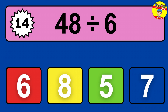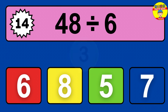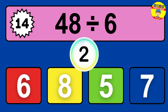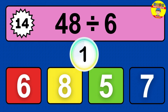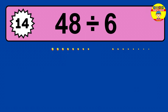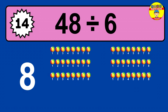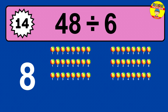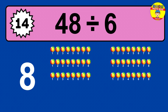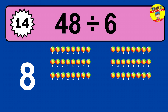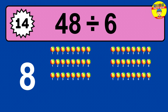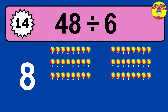48 divided by 6 — time to think. Let's go to the solution. Divide the number 48 by 6. Each group contains 6 units, so dividing 48 by 6 results in 8 equal groups. Thus, the result is 48 divided by 6 equals 8.